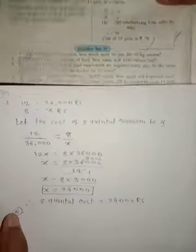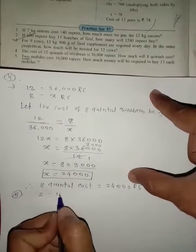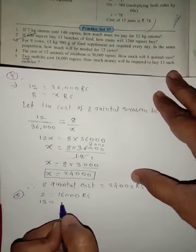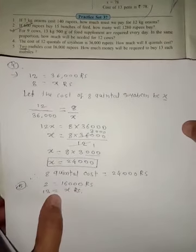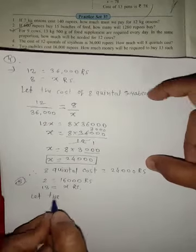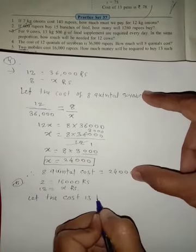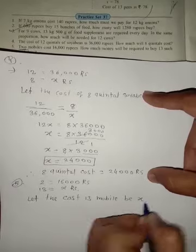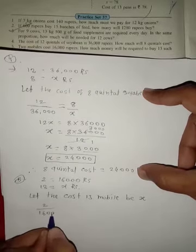Two mobiles equal 16,000 rupees, and 13 mobiles equal x rupees, because we don't know how much money is required for buying 13 mobiles. Let the cost of 13 mobiles be x.